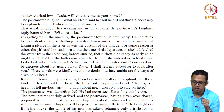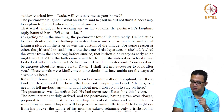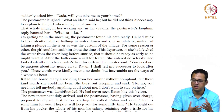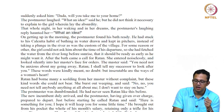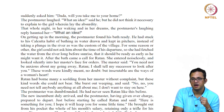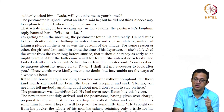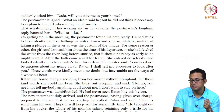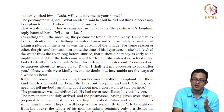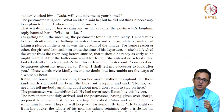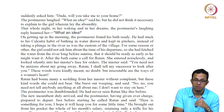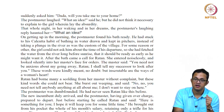The master said, 'Do not be anxious about my going away, Ratan — I shall tell my successor to look after you.' These words were kindly meant no doubt, but inscrutable are the ways of the woman's heart. The girl had experienced a complete sense of rejection, and she retains that rejection no matter what. She refuses any communication beyond what is absolutely necessary — that is the point in the story where communication takes a different turn, strictly one of servant and master. We stop here today and will conclude this story in the next lecture.